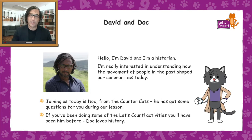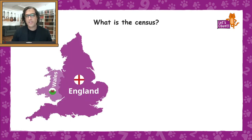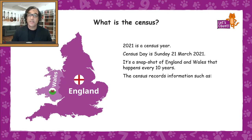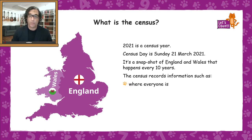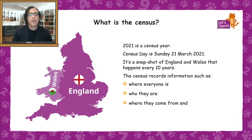Doc absolutely loves history. So, what is the census? 2021 is a census year and census day is Sunday the 21st of March 2021. The census is a snapshot of England and Wales that happens every 10 years, and it records all sorts of information such as where everyone is, who they are, where they come from, and what jobs they do.